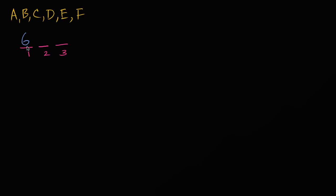For each of those six scenarios, how many different people could sit in chair number two? In each of those six scenarios, we've taken one of the six people to sit in chair number one, so you have five people left for chair number two. That gives you 30 total scenarios for the first two chairs. For each of those 30 scenarios, you still have four people not in chairs, so you have four choices for chair number three. Your total number of permutations is six times five times four, which equals 120 permutations.